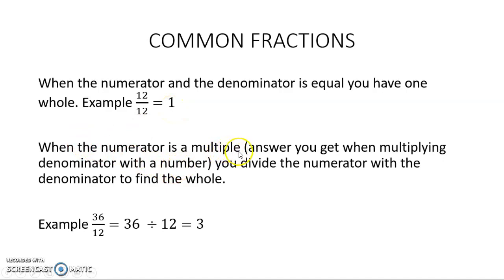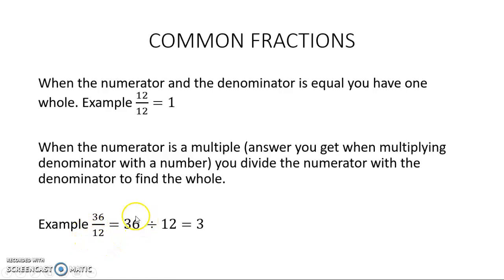But when my numerator is a multiple — what is a multiple? It's the answer you will get when you multiply a number with another number, in this case the denominator. So you divide the numerator by the denominator to find how many wholes. Can you see 36 is a multiple of 12? Because I multiplied 12 by 3 to get 36. So how many wholes? 3. I have 12 over 12, 12 over 12, and another 12 over 12, which is 36. So it is three whole numbers.